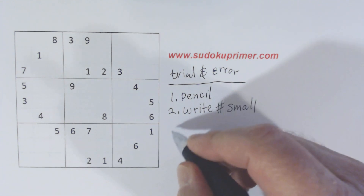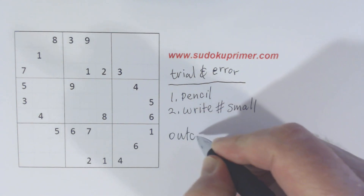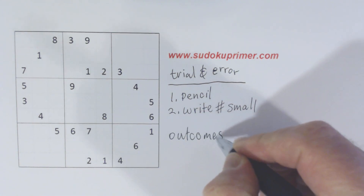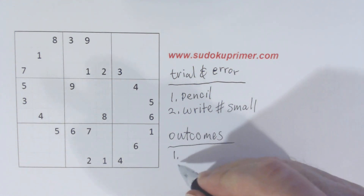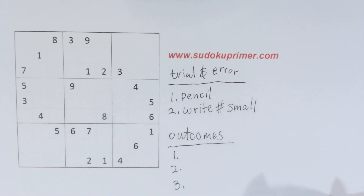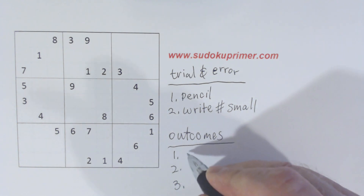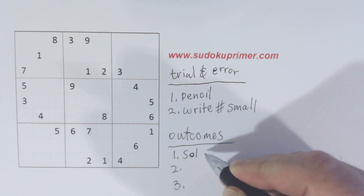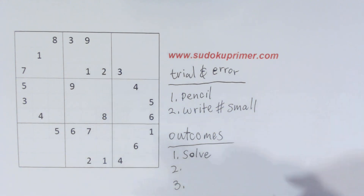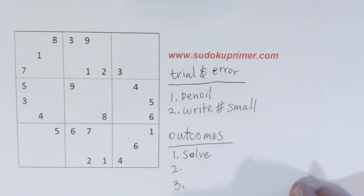You can have one of three outcomes when you do trial and error. The first is you can solve the puzzle — you choose one of the cells to put the number in, you continue solving, and you finish by filling in all the numbers, and it's solved.